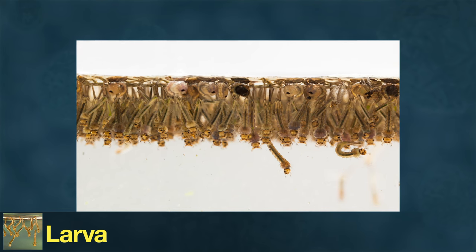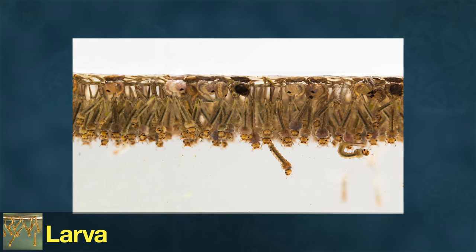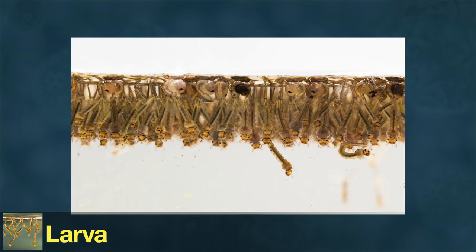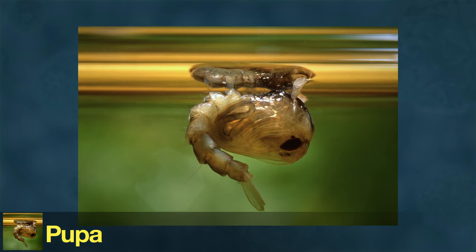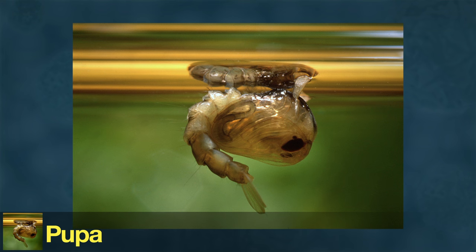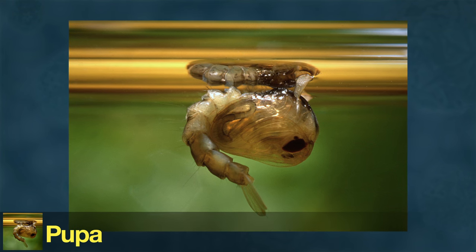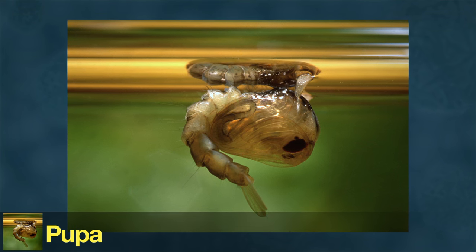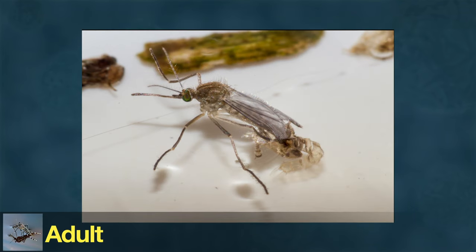After growing and shedding its skin several times, the larva enters the third stage of its life cycle—the pupa. The pupa stays near the water's surface and needs air to breathe, but does not eat. It puts most of its energy into developing into its fourth and final stage—the adult.